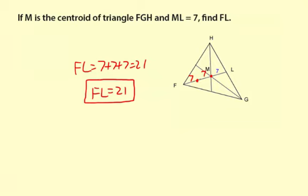If you want to use an equation, you can do that as well. You can say that ML equals one-third of FL, and ML we know is 7, so 7 equals one-third FL.